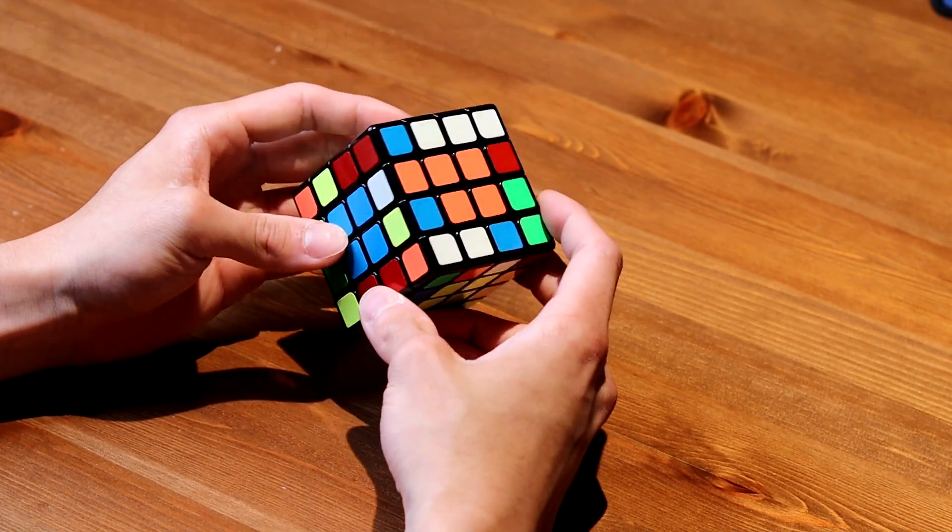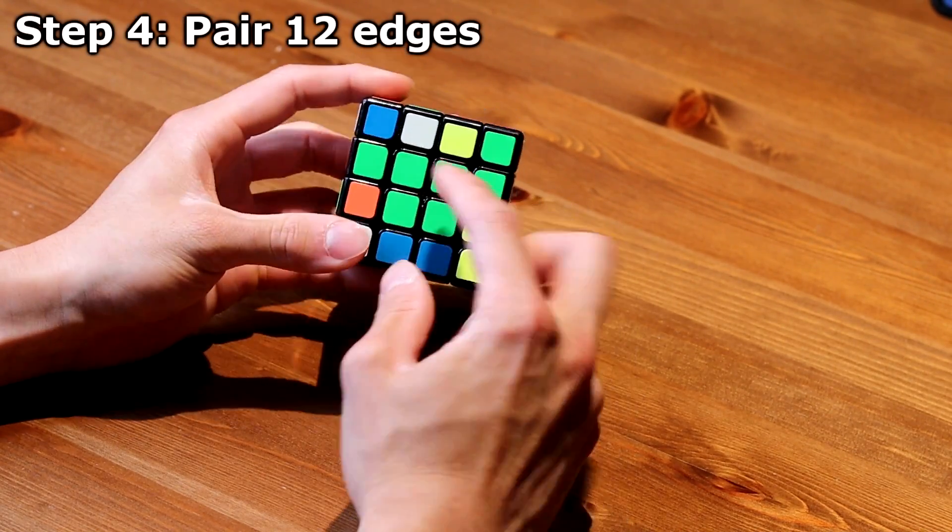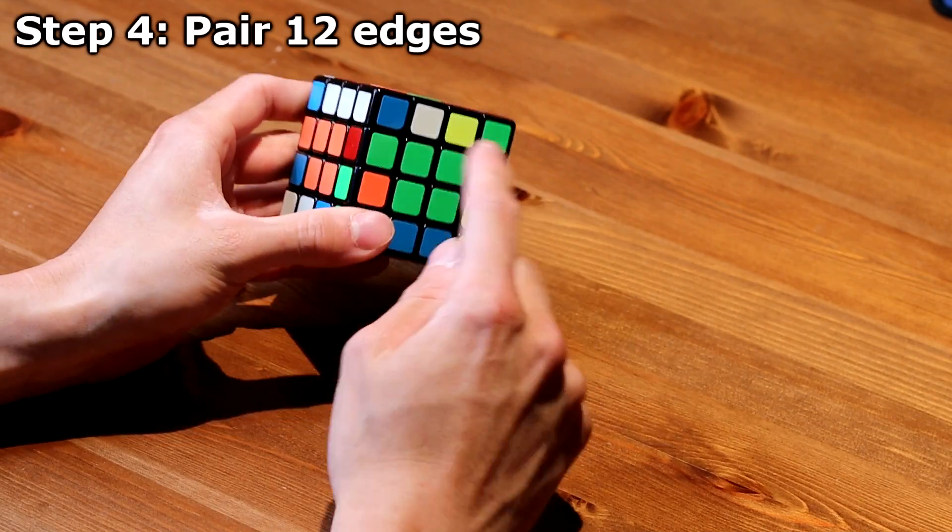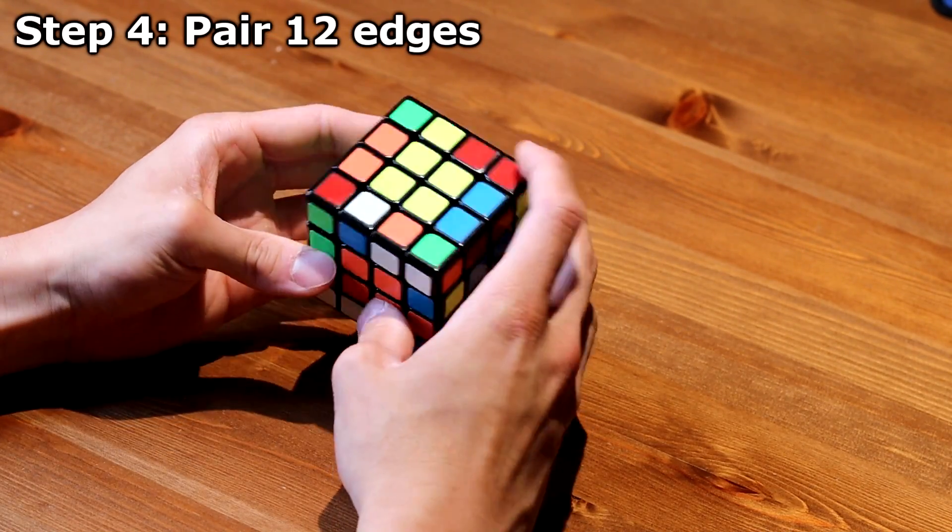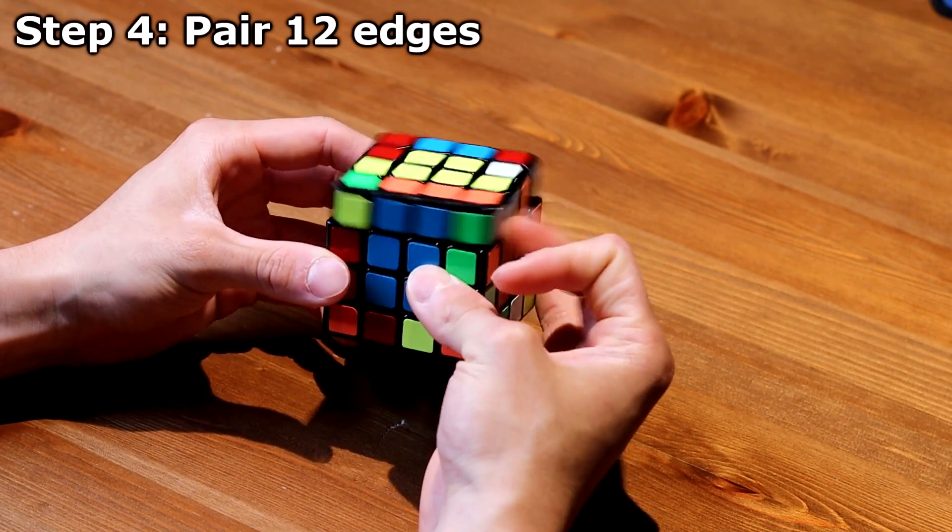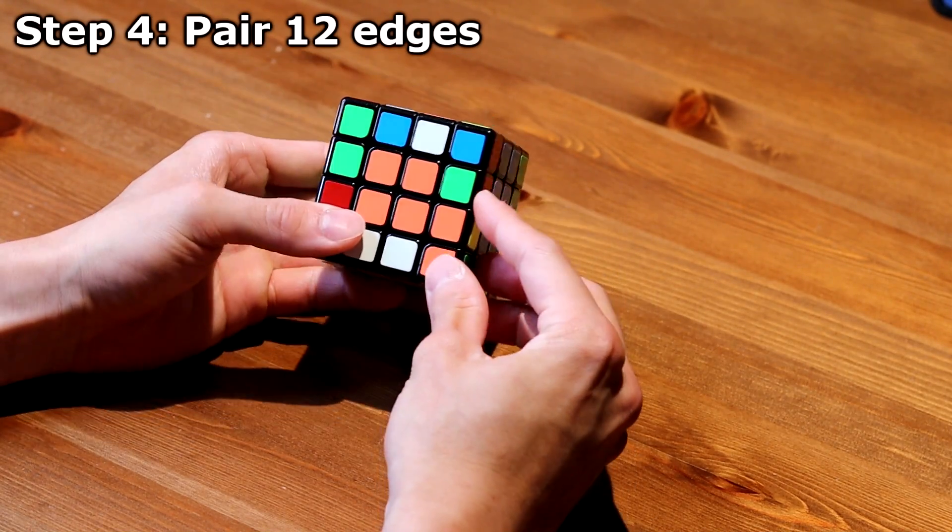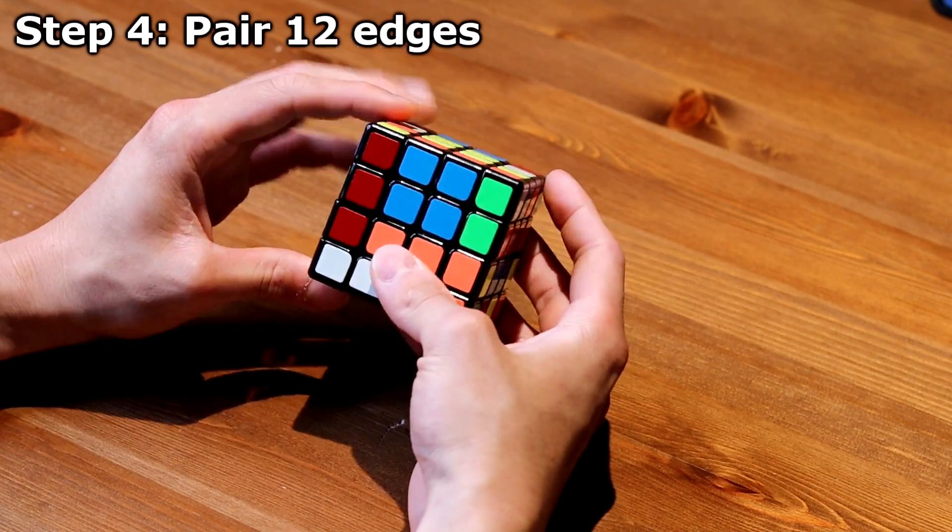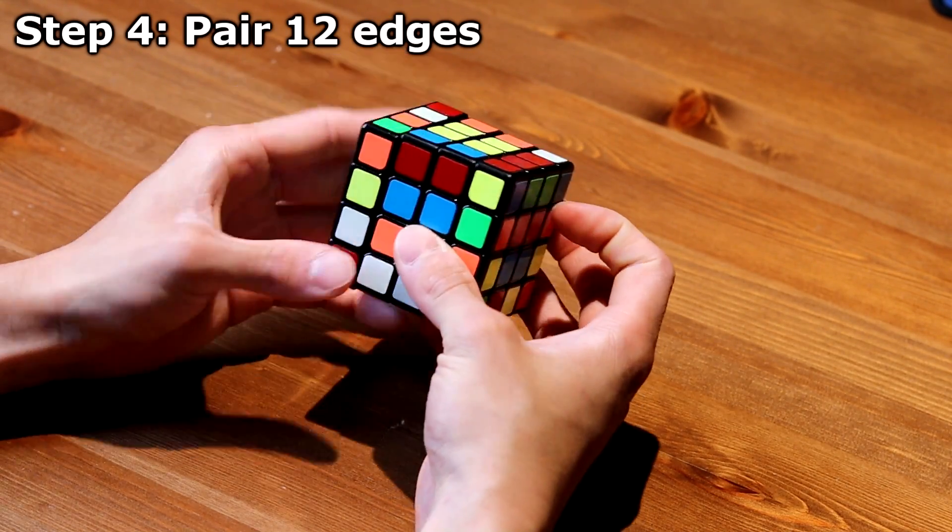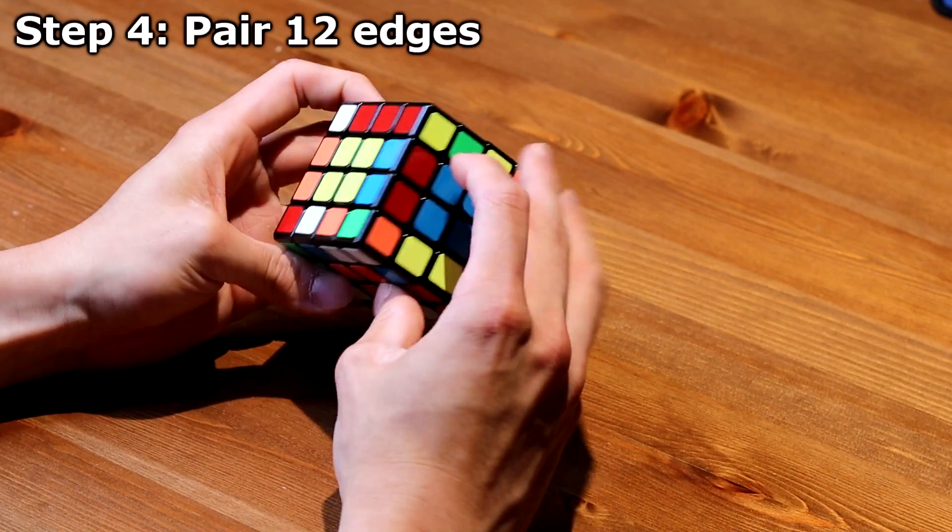Now onto the edges. I see a green and yellow, so I find that a green and yellow piece is right here. Move it so that it aligns on the same face horizontally. Slice, move an unsolved piece back, and then there's one edge.